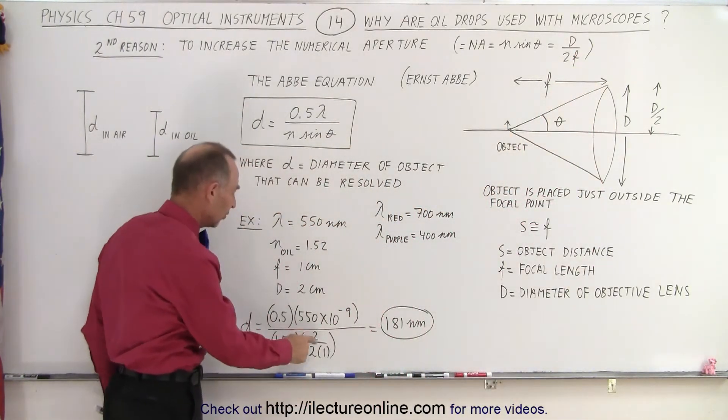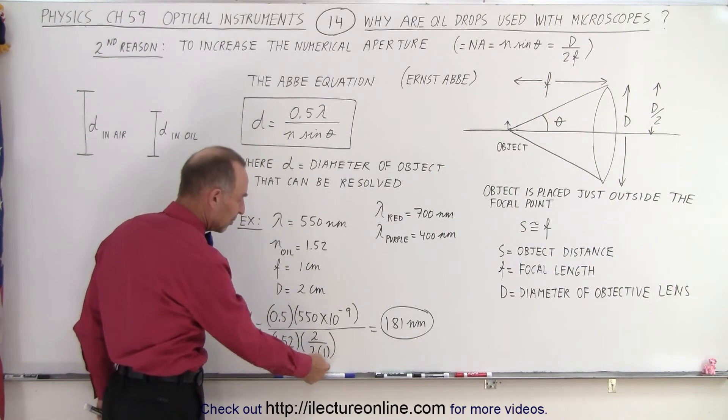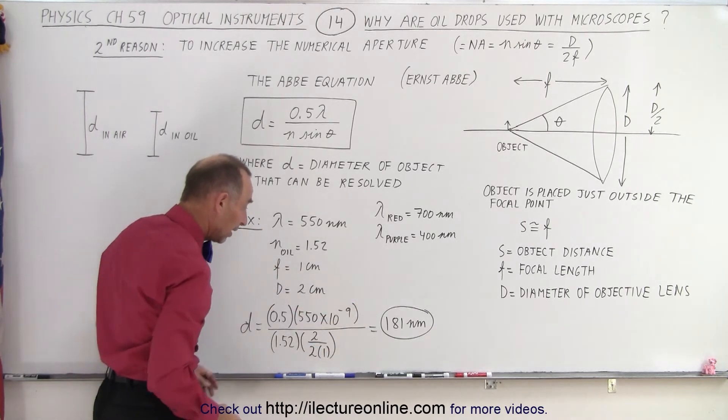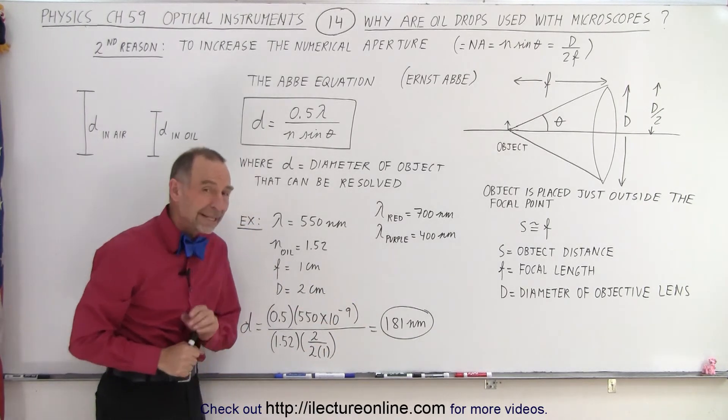So the diameter was 2 centimeters, twice the focal length of 1 centimeter, notice centimeters cancels out so we don't have to convert, and we end up with something of 181 nanometers.